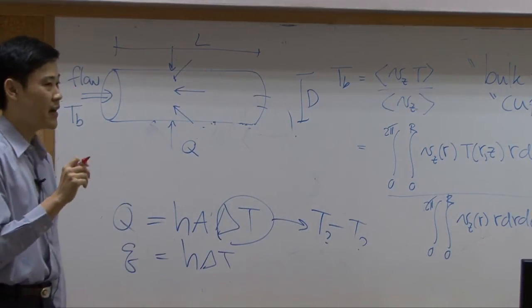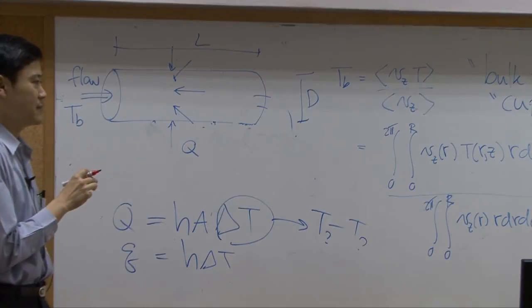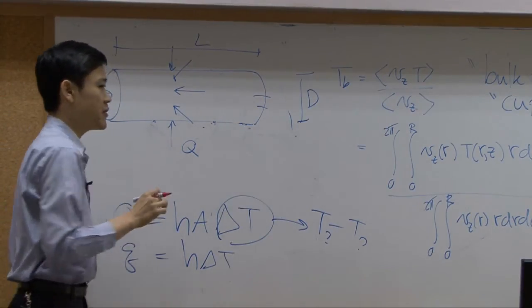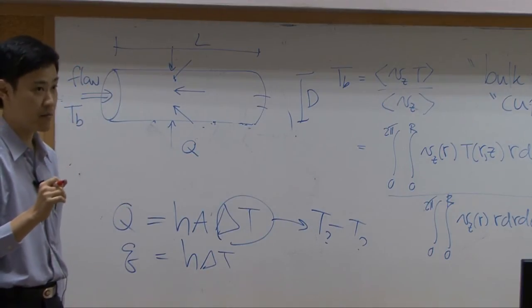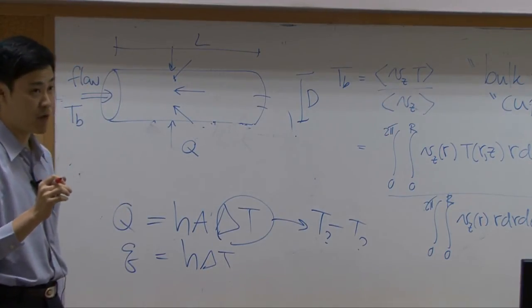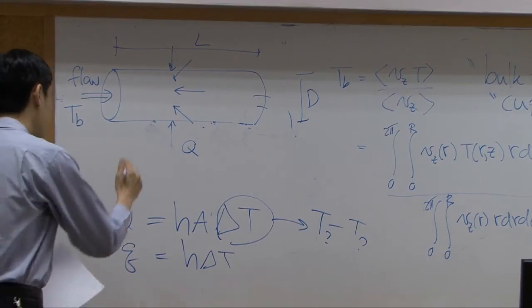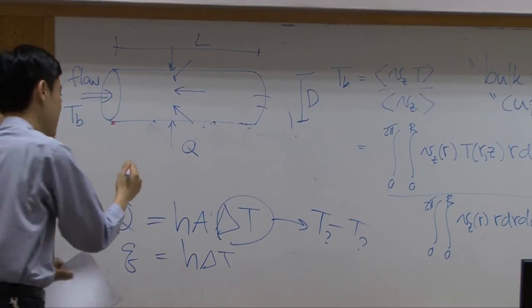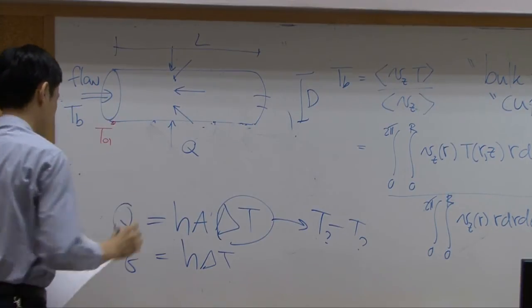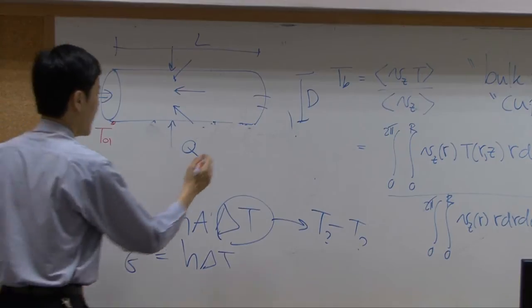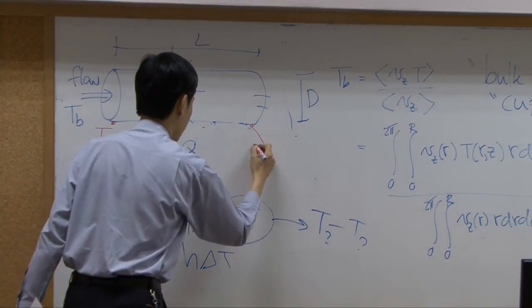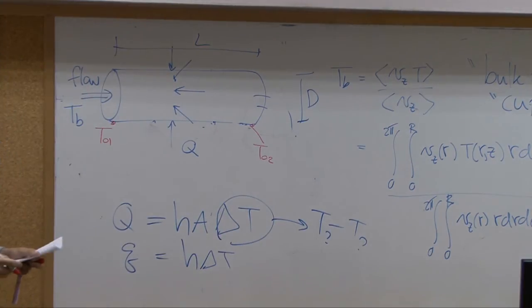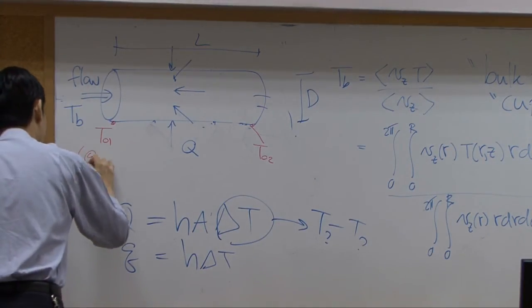Suppose in general problems, temperature of surface here may not be constant. It may change with respect to position as well. Suppose the temperature of the surface here at the inlet of the pipe is T01. And at outlet here, temperature is T02. These two are at the surface.